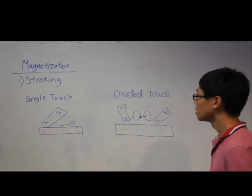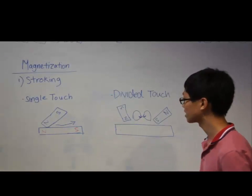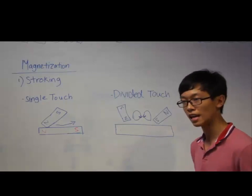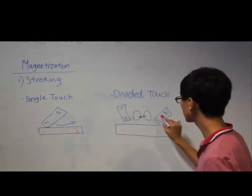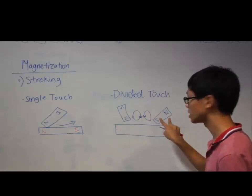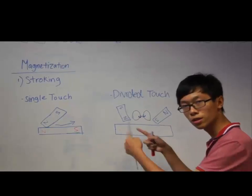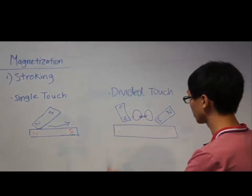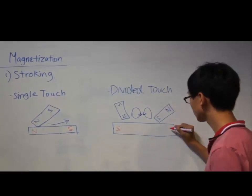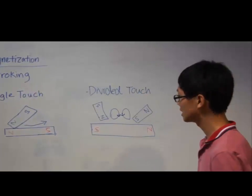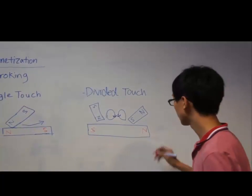Now I'll go to divided touch. As you can see here, divided touch looks more complicated compared to single touch. But the reason why people use divided touch is because it's more efficient and stronger. As you can see, two permanent magnets are used, and you switch the polarities around. You can see they are both going in this direction. The polarities that should be induced are south pole here and north pole there. It's more complicated and they both produce the same results, but this one produces a stronger magnet.